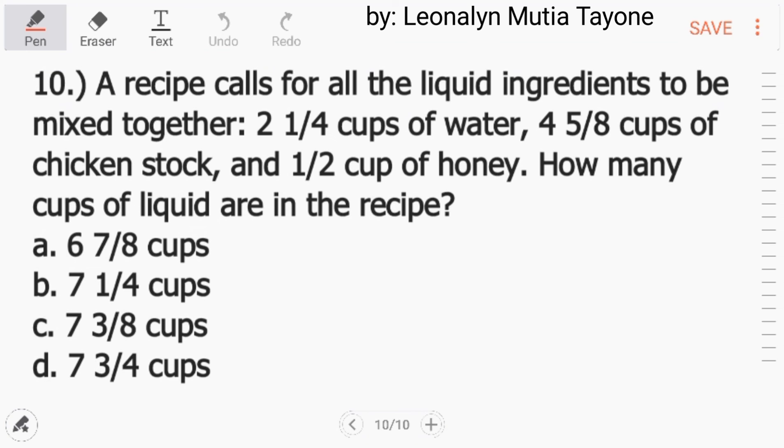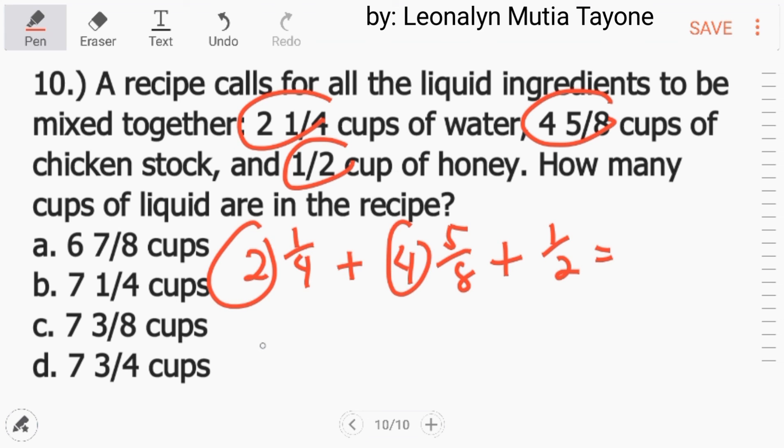Number 10. A recipe calls for all the liquid ingredients to be mixed together. 2 and 1/4 cups of water, 4 and 5/8 cups of chicken stock, and 1/2 cup of honey. How many cups of liquid in the recipe? I-add mo lang yan. So, 2 and 1/4 plus 4 and 5/8 plus 1/2. Unahin natin i-add ang mga whole number. And that is 6. Tapos, itong mga fraction na to, hanapan natin ng least common denominator, which is 8. So, 8 divided by 4 equals 2. 2 times 1 equals 2. Ito naman, i-kopyahin lang kasi 8 na siya. 8 divided by 2 equals 4. 4 times 1 equals 4. So, pariho na sila ng denominator. Kopyahin lang ang denominator na 8. At i-add natin ang mga numerator. 2 plus 5 plus 4, and that is 11.